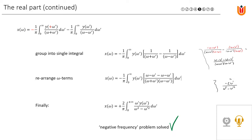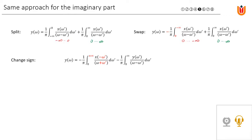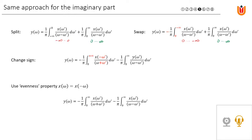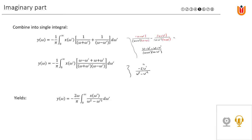The same recipe is followed for the imaginary part. We again split into two domains — minus infinity to zero and zero to infinity — then swap the integration boundaries on the first term, which changes its sign, then change the sign of the argument ω′, turning the integration boundary to plus infinity. Applying the evenness property to the real part x, we again have two integral terms with the same boundaries. Combining them into a single integral and working out the terms between square brackets for ω and ω′, we group everything together to yield the final expression for the imaginary part as an integral function of the real part.